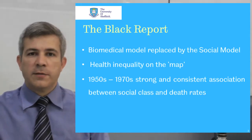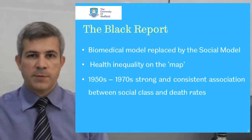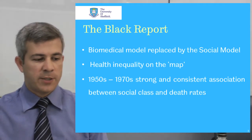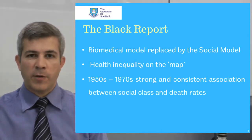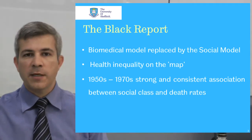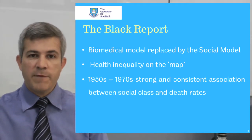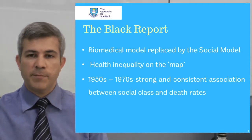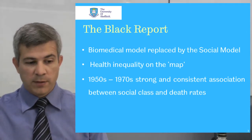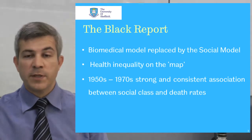Health inequality and its potential mechanisms gained prominence at both policy and research agendas after the publication of the Black Report in 1980, when the social model became clearly more relevant than the medical model in public health. Several analyses were conducted linking poverty and social class with different causes of death in the UK, such as malignant neoplasms and diseases of the circulatory, digestive, and respiratory systems.